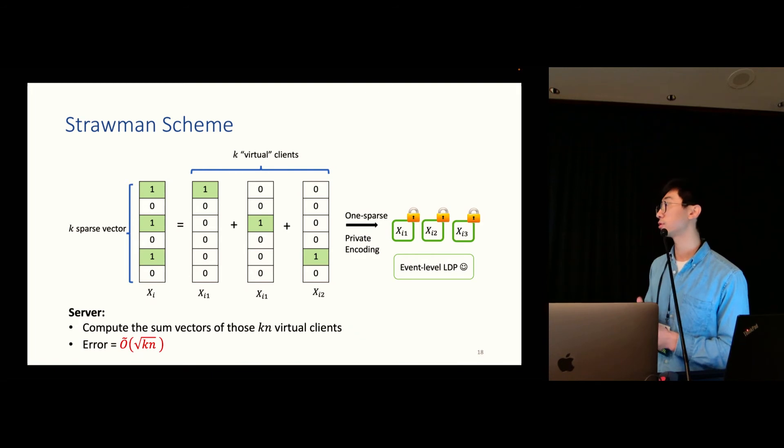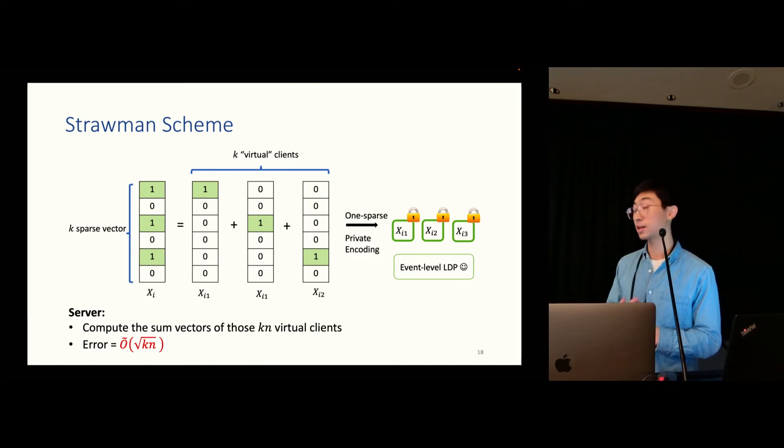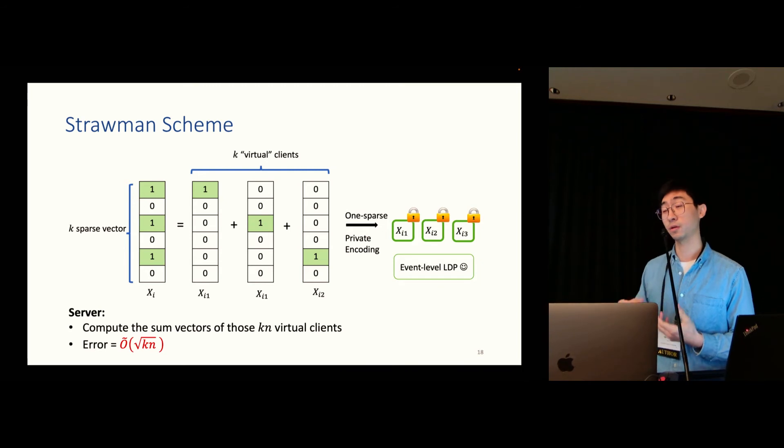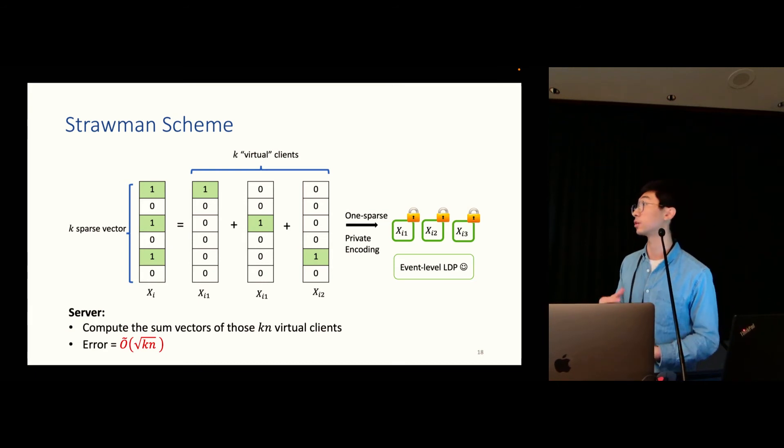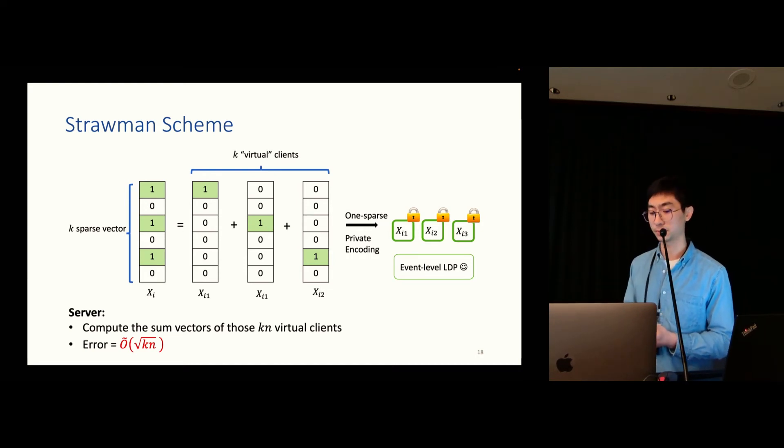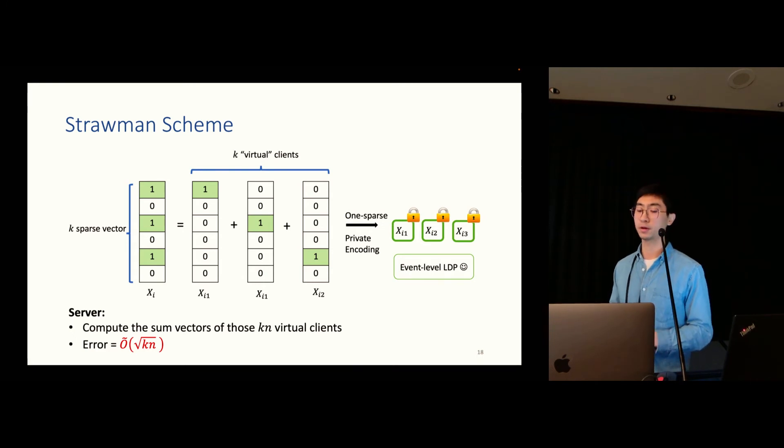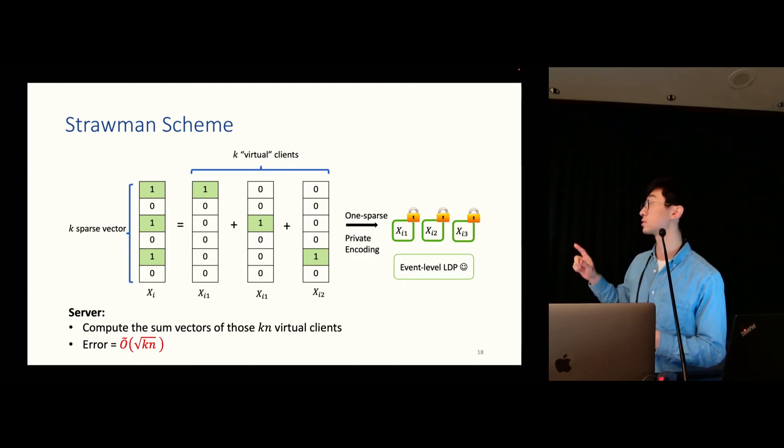So now, we can construct a very natural strawman scheme from the previous one sparse scheme. So now, we are given a k sparse vector. So, we can just think about it as k virtual clients, and all virtual clients will hold a single sparse vector. We simply use the previous one sparse private encoding to encode all those vectors, and then send all the encodings to the server. This scheme actually satisfies event level LDP. The server simply computes sum vectors of all those k virtual clients, and the error would be roughly square root k times n. But this is actually not optimal, and we can actually get rid of that square root k factor here.